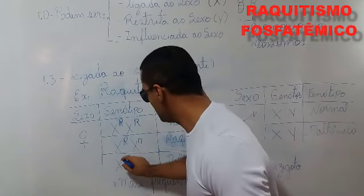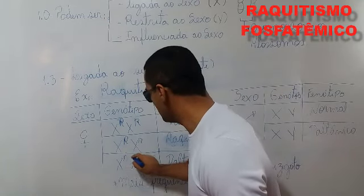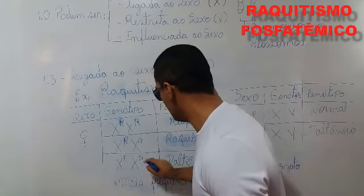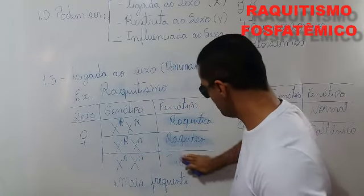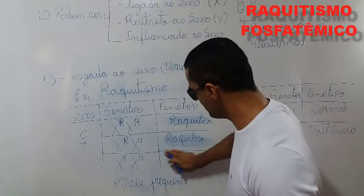E ela sendo X com alelo recessivo r e X com alelo recessivo r — ela será normal.